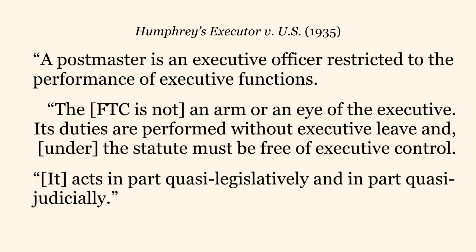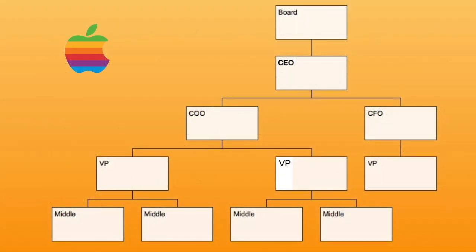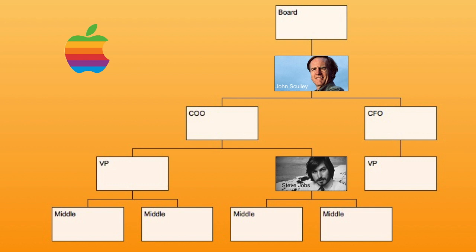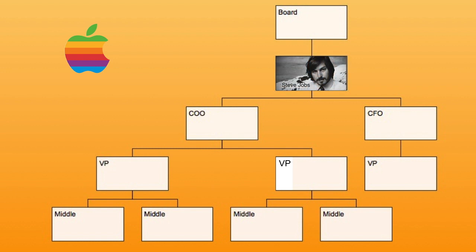Humphrey's Executor lays the foundation for what are called the independent administrative agencies. To help appreciate its significance, consider the case of a publicly traded corporation like Apple. In the beginning was Steve Jobs — well, we fast forward a bit, ignoring Steve Wozniak. Apple is incorporated and the board of directors appoints Jobs as CEO. Apple has a tough time and Jobs brings in John Scully from Pepsi Cola to help out. The board demotes Jobs and appoints Scully as CEO. Jobs departs. Apple struggles.